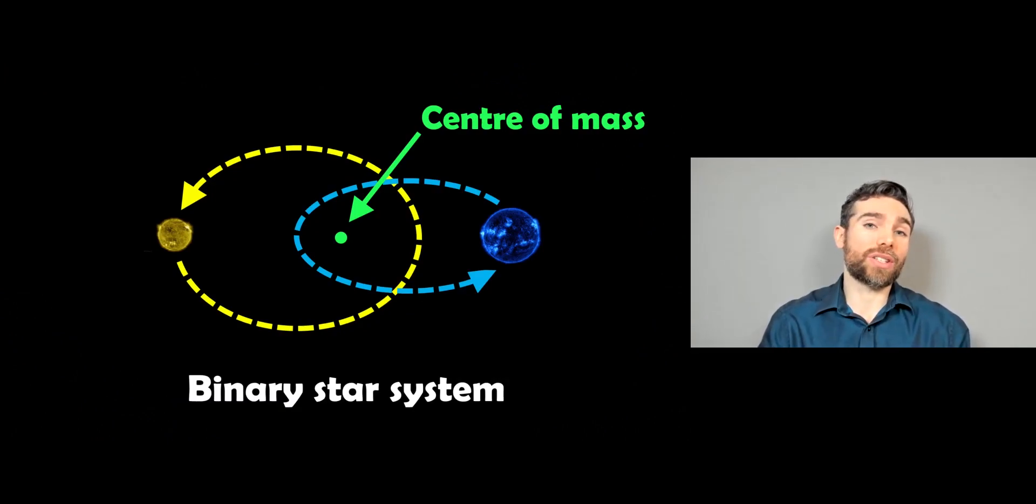So a binary star system is where you have two stars that orbit a common center of mass. And they can be different sizes, slightly different orbits, and they're not particularly rare either. Binary star systems can be quite common.